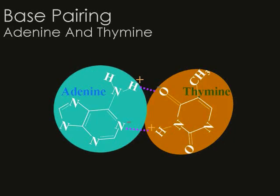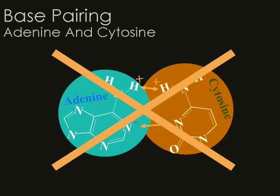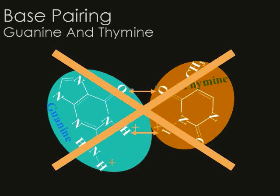Here's the base pairing between adenine and thymine — this is the only way that the hydrogen bonds will match up. Adenine only pairs with thymine, and thymine only pairs with adenine. Purines cannot pair with purines because the rung would be too long, and pyrimidines can't pair with pyrimidines because the bases would be too short. Adenine can't pair with cytosine because the hydrogen bonds don't match up, and guanine can't pair with thymine for the same reason.